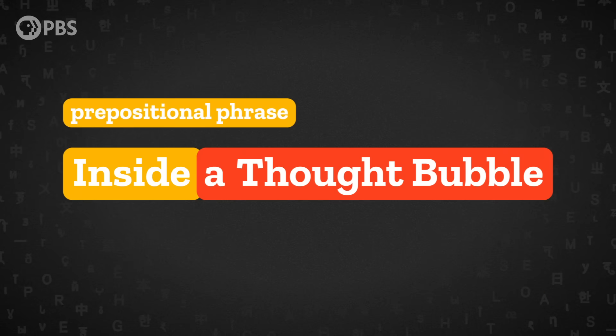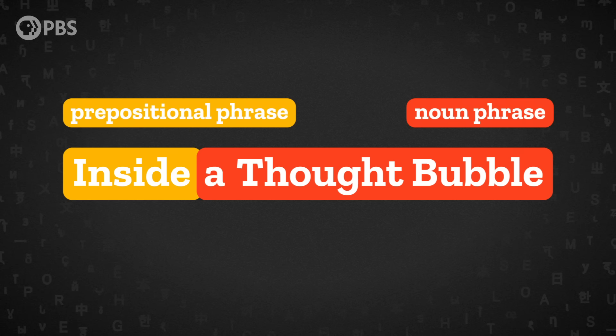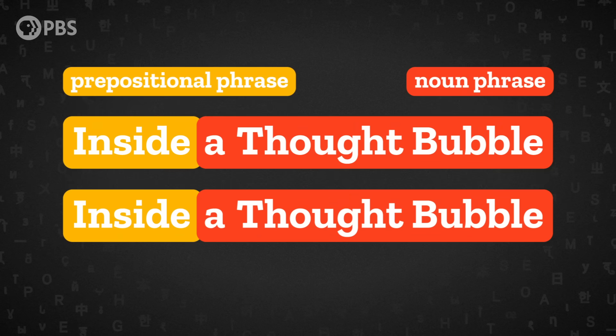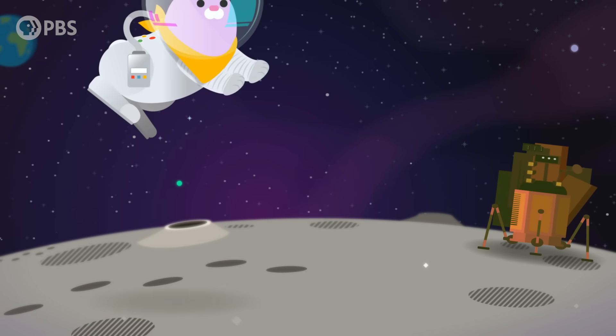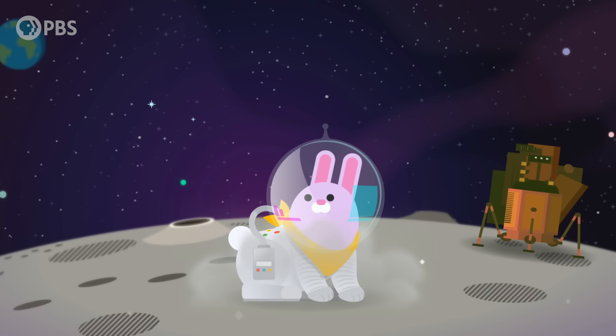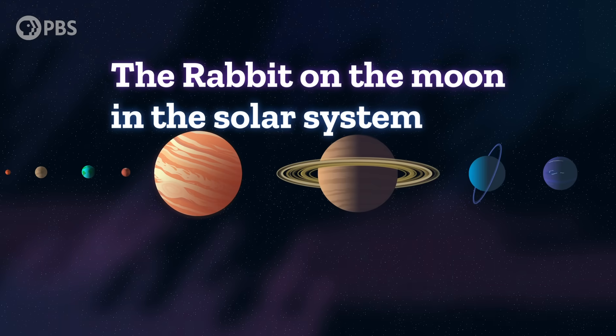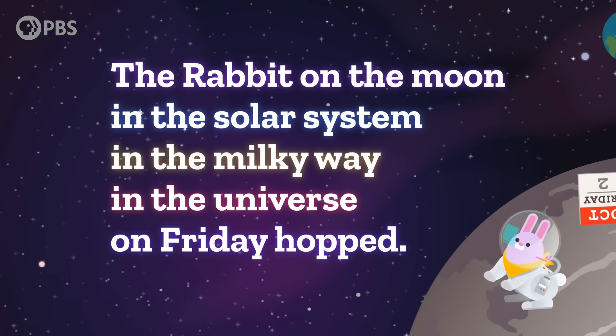Language is also recursive. Take the phrase 'inside a Thought Bubble' — 'inside' is a preposition, so this is a prepositional phrase, and 'a Thought Bubble' is a noun phrase. Inside this noun phrase we can add another prepositional phrase: 'inside a Thought Bubble.' And we can keep going. Recursion just means we can build structures inside of other structures. For instance: 'The rabbit on the moon, in the solar system, in the Milky Way, in the universe, on Friday, hopped.' Thanks Thought Bubble. Our simplified little set of four grammar rules is powerful enough for recursion.